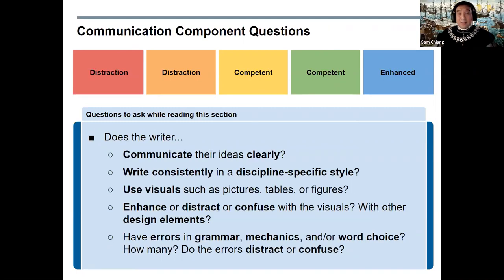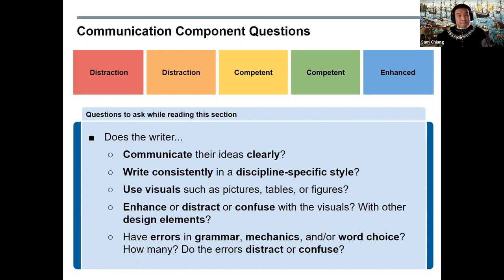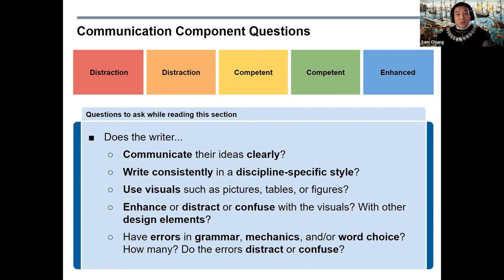Now take some time to look through the entire paper again for the communication component. Does the writer communicate their ideas clearly? Does the writer consistently use a discipline-specific style? Does the writer use visuals such as pictures, tables, or figures, and do those visuals enhance or distract or confuse the reader? Does the writer have errors in grammar, mechanics, and/or word choice? How many, and do the errors distract or confuse the reader?